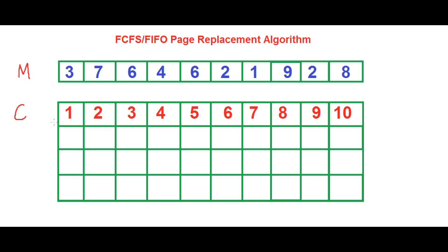Now, as the size of the cache memory is very low, the process scheduler needs to decide which element or which data needs to be thrown out of the cache memory to make space for the incoming element.